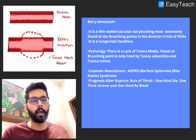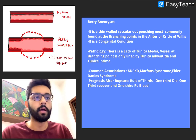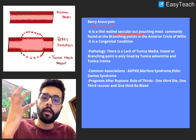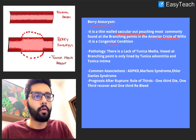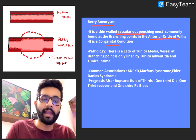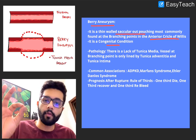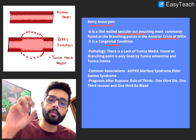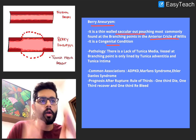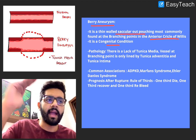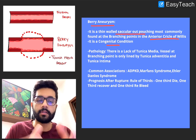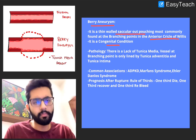A berry aneurysm is a thin-walled saccular outpouching of an artery of the brain, commonly seen in the anterior circle of Willis. Berry aneurysm is a congenital condition — congenitally, there is a lack of tunica media in these vessels, making them weaker and more prone to developing an aneurysm or outpouching, and eventually rupture. It is more common in the anterior circle of Willis.